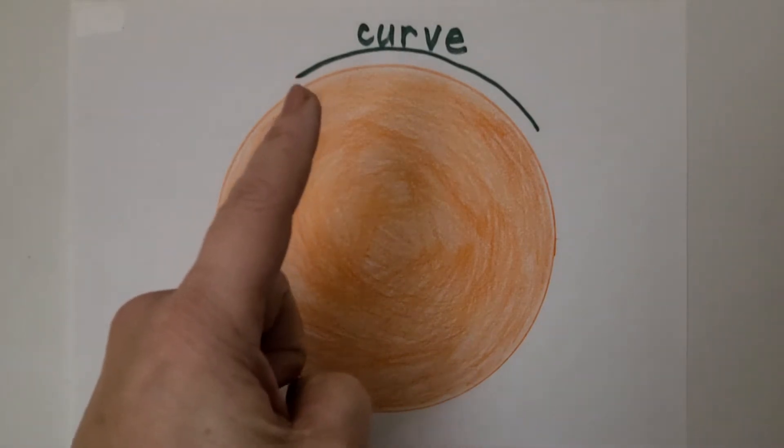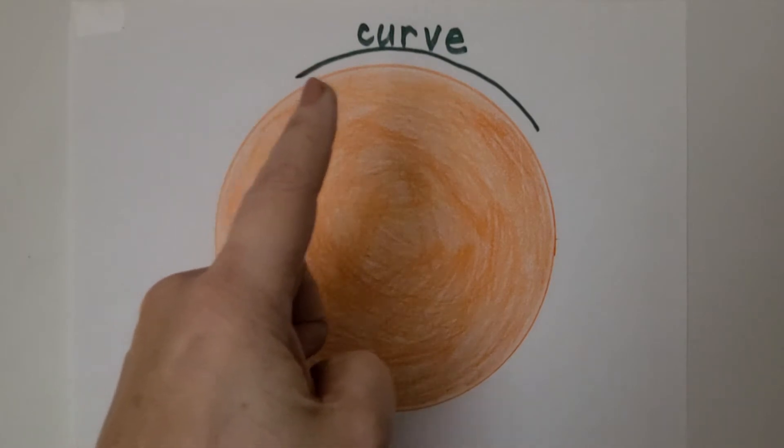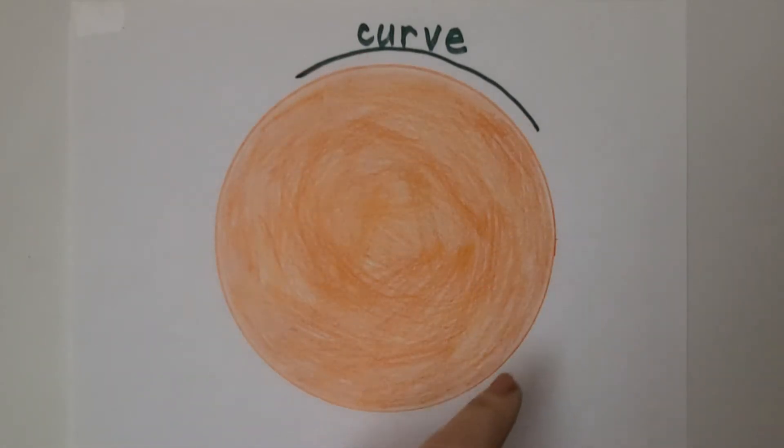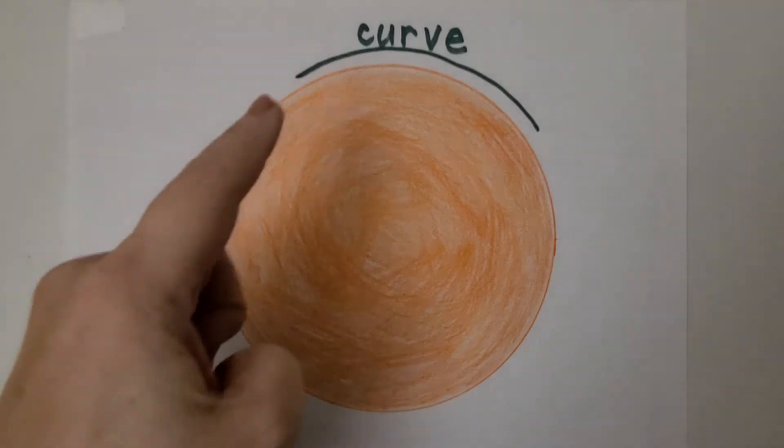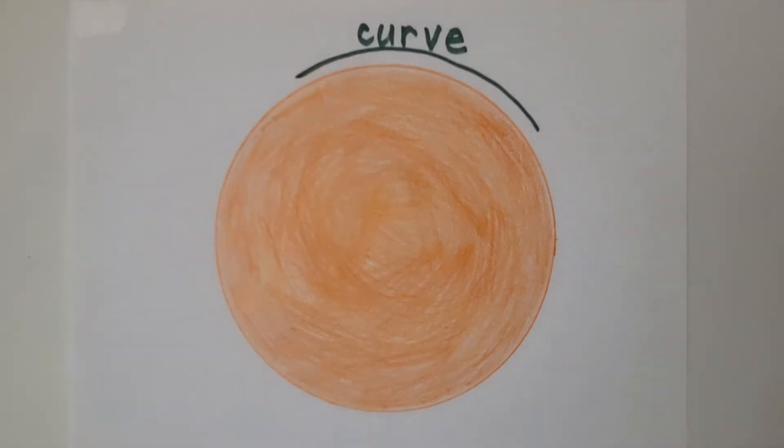We can start anywhere as long as we finish where we started. We can start here and we go all the way around and back to where we started. The edge of the circle is not straight.